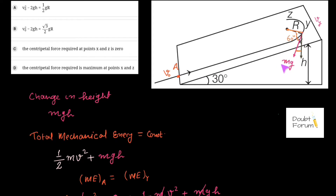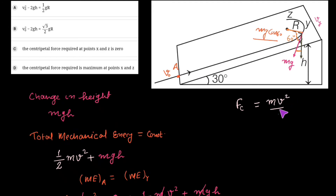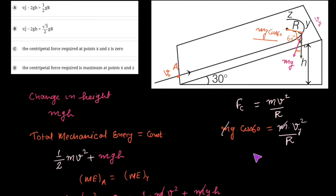The component of weight Mg toward the center of the semicircular path is Mg·cos60°. This equals the centripetal force Mvy²/R. So: Mg·cos60° = MVy²/R. Cancelling M, and using cos60° = ½, we get Vy² = Rg/2.